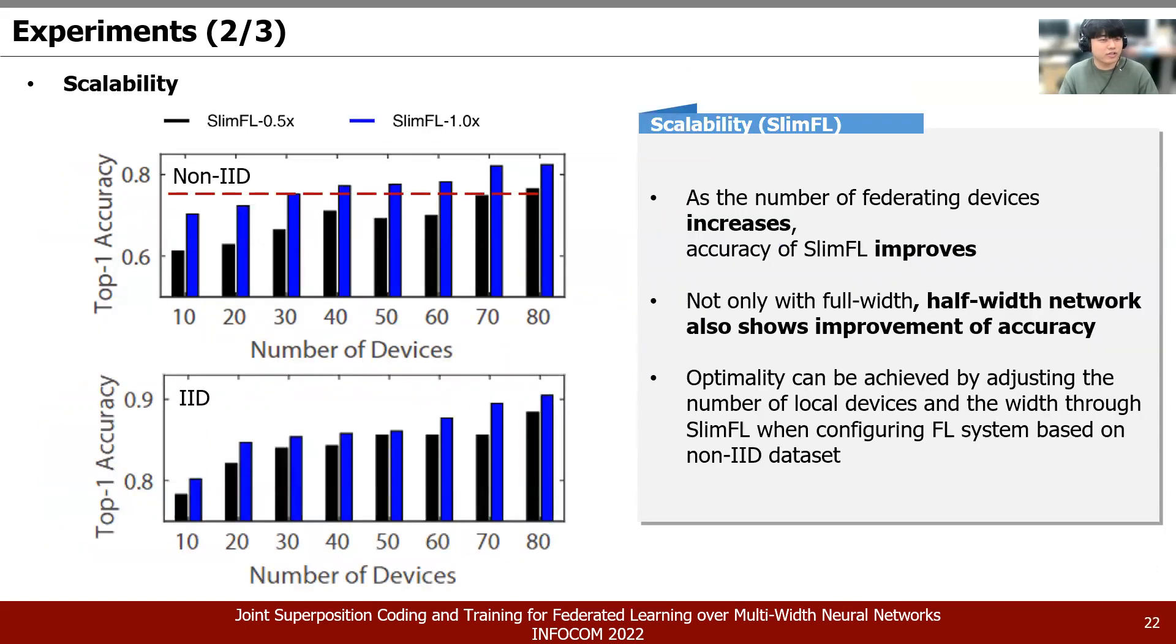Here, I will discuss the two major results of our research. Scalability is one of the most important quality factors of federated learning. We observe that as the number of federating devices increases, the accuracy of SlimFL improves. And not only the full width network, but half width network also shows improvement of accuracy. In addition, using the red dotted line as the baseline, which uses over 70 federating devices, the half width SlimFL shows higher accuracy than the accuracy of full width SlimFL using 30 federating devices. We think that it is impressive that optimality can be obtained by adjusting the number of local devices and the width through SlimFL adaptation when FL system is configured based on non-IID data sets.